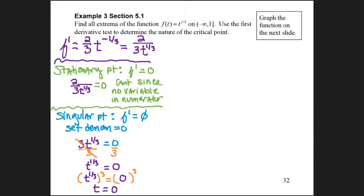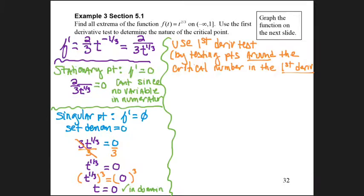I now have my first and only critical point. I double check it's in the domain, and since my domain is negative infinity to 1, it is in the domain. Now I'm ready to use the first derivative test by testing points around my critical number in the first derivative.